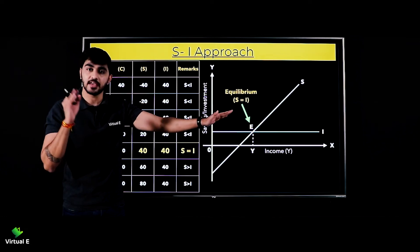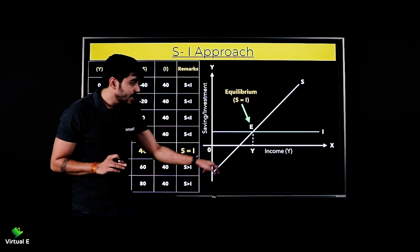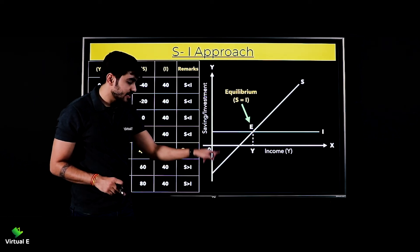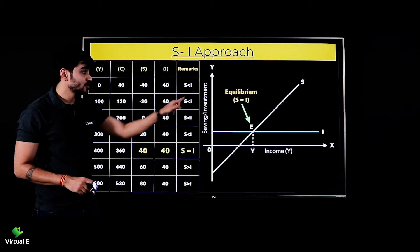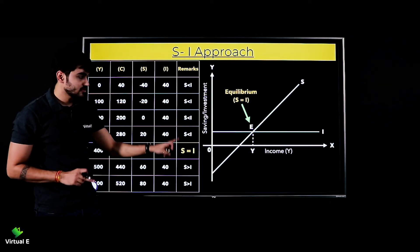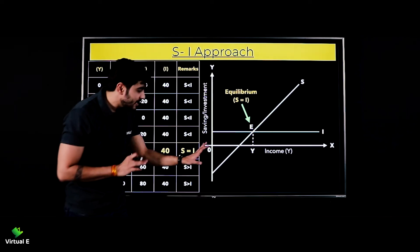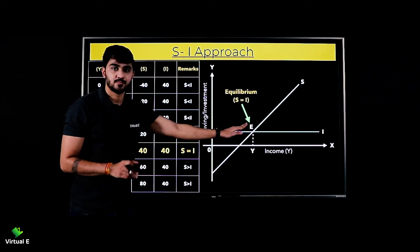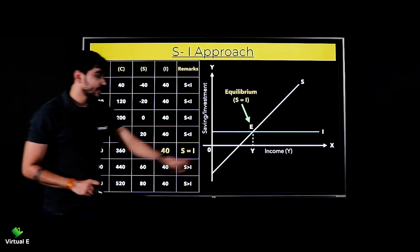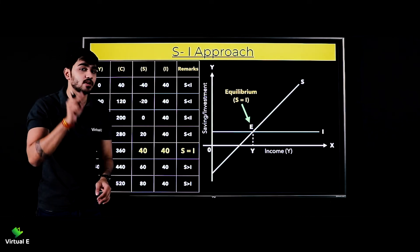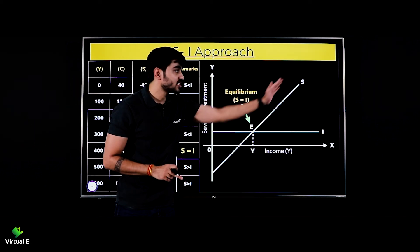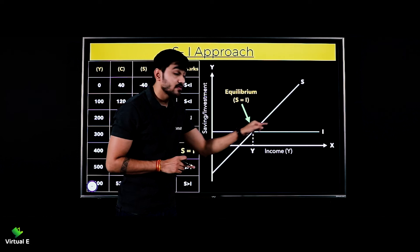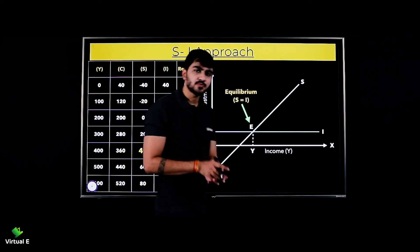Dekho jab hum log initially shuru karte hain - yahan pe hai aapka S graph, yahan pe hai aapka I ka curve. Dekho kaun sa upar hai - I is greater than your S. So this is phase one, when your investment is more than your savings. Yeh wala jo point hai, this is your equilibrium point. Is ke pahle jitna bhi graph hai, us mein aapka investment is greater than your saving. Phir aata hai aapka equilibrium point - that is the E point, when your savings is equal to the investment. And finally the third phase jahan pe your savings is more than your investment - savings toh upar jata ja raha hai but investment wahi stagnant ho gaya hai.